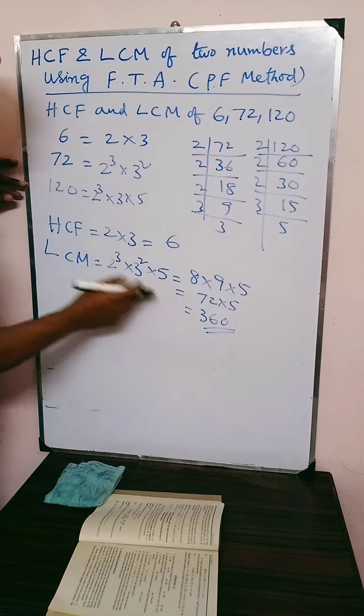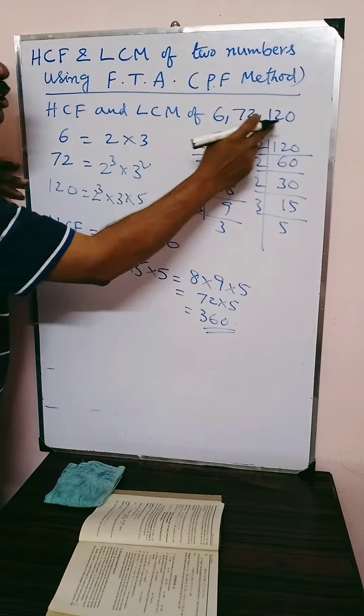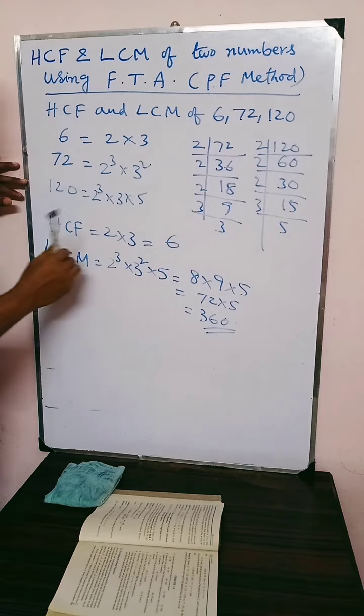So 360 is the LCM of the 3 numbers, given numbers that is 6, 72 and 120. And 6 is the HCF of the given numbers.